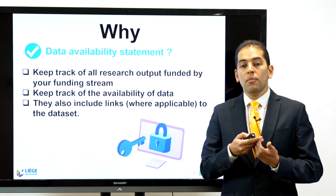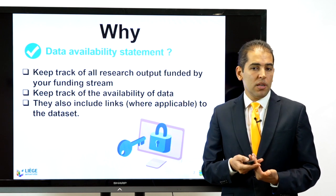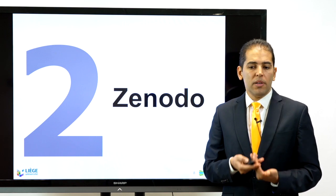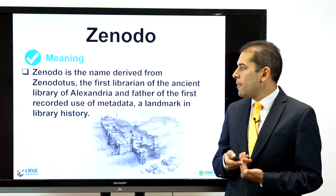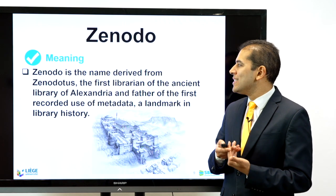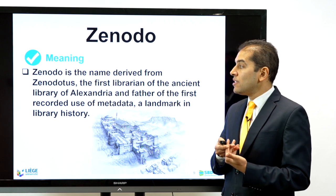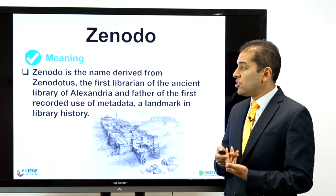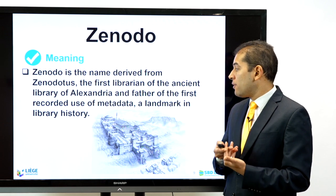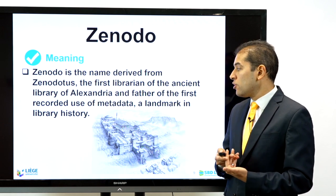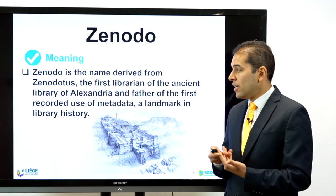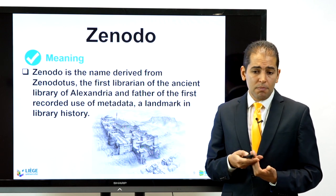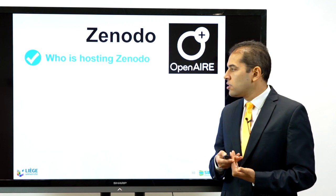Regarding Zenodo specifically — the name Zenodo is derived from Zenodotus, the first librarian of the ancient Library of Alexandria and the father of the first recorded use of metadata, a landmark in library history. That's where the name comes from.